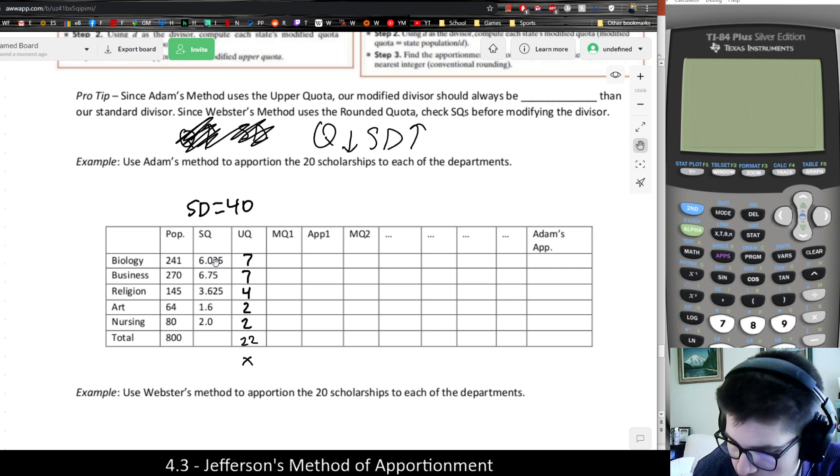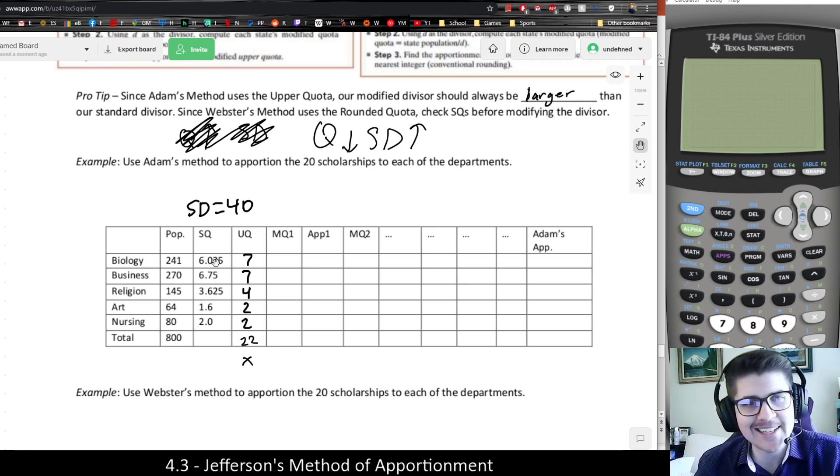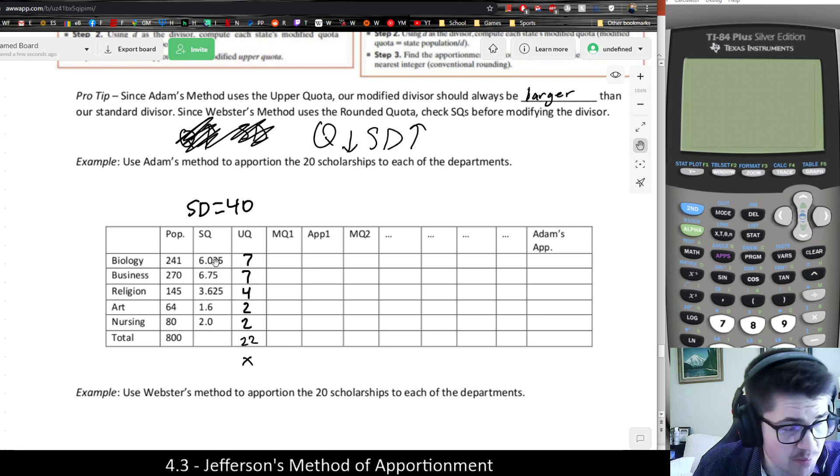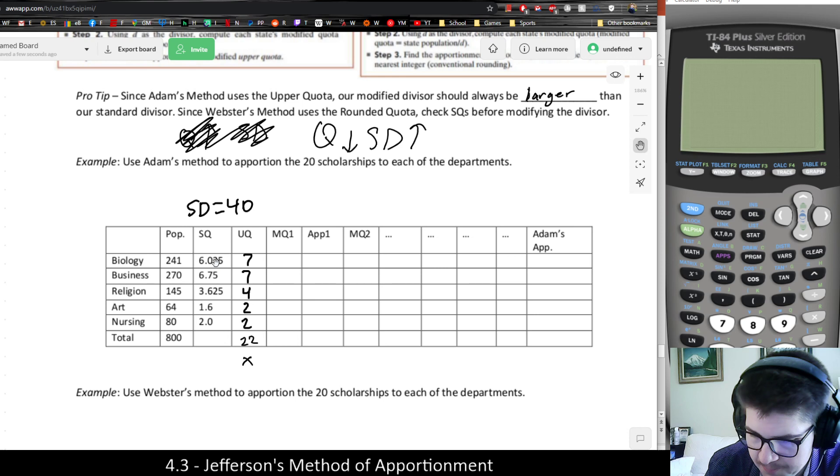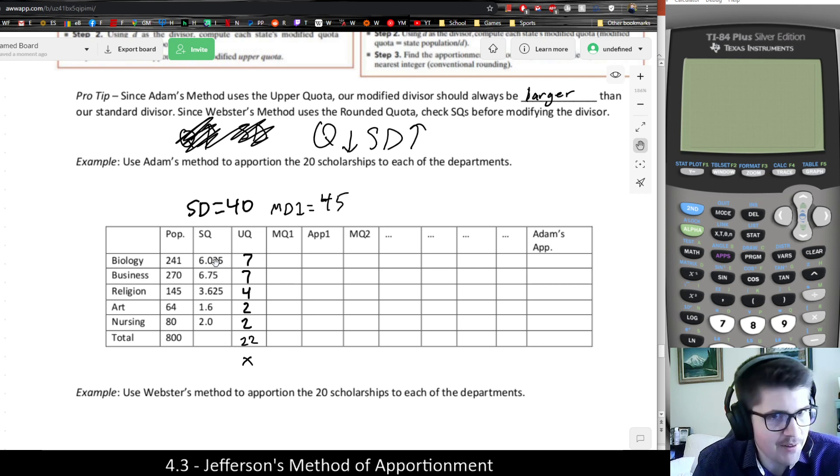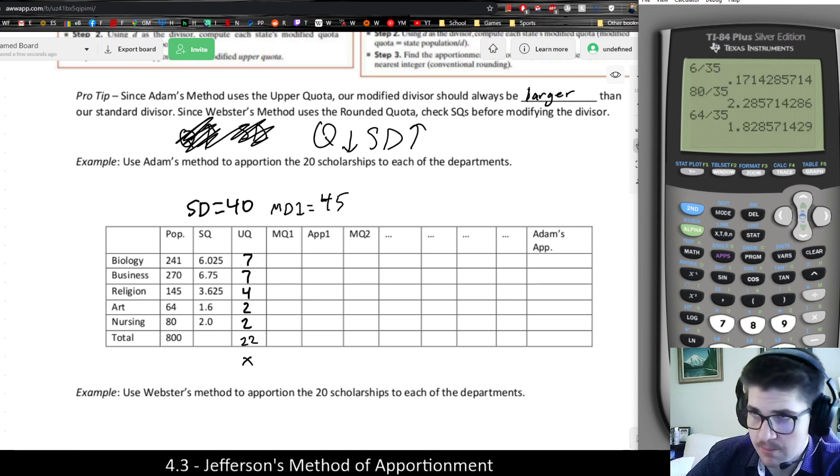That's something that you can remember about Adam's method. The modified divisor should always be larger than the standard divisor. And so it gives you something where you know what to do first. You can skip even calculating the standard divisor. But I always recommend finding the standard divisor first because it gives you a sense of where you're at. How close are you? With 22, we're pretty close.